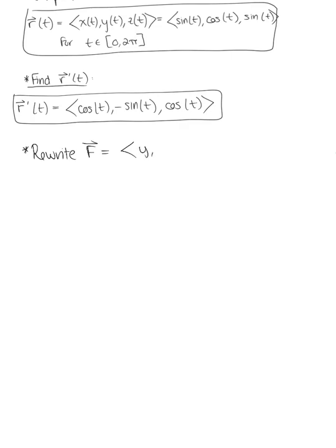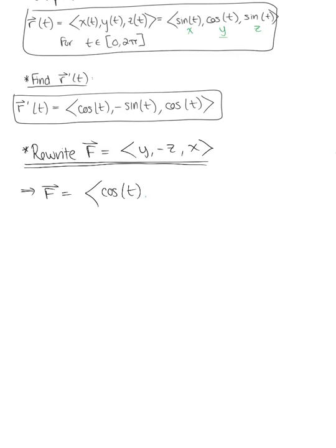Our vector field here is defined by the components y, negative z, x, and we're rewriting it in terms of t. So the vector field f is equal to: the first component is y, which becomes cosine of t; next is negative z, which becomes negative sine of t; and last is x, which gives us sine of t.